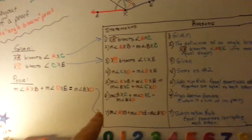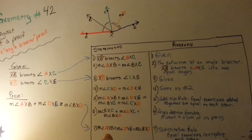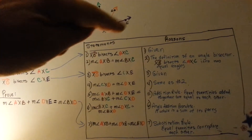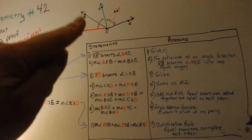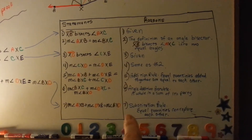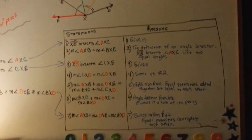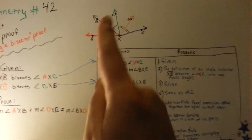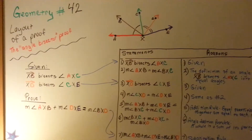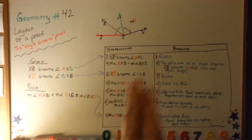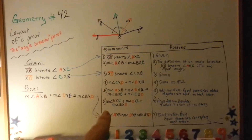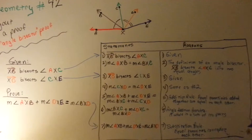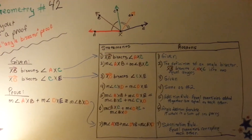Now we have to prove the last line: the measure of axb — the red and brown angle — plus the measure of dxe — the orange and purple — is equal to the measure of bxd — the brown and orange. Our reasoning is the substitution rule: equal quantities can replace each other. We've proven that these two combined are equal to the outside ones, and that's what we were trying to do. If this is confusing, just pause the video and go through these measures slowly and methodically — it does make sense. That's the Angle Bisector Proof.